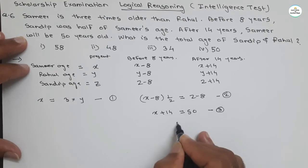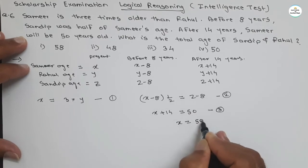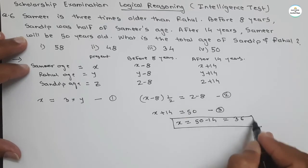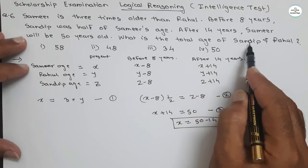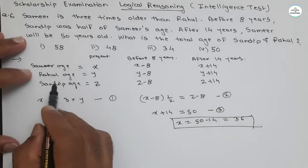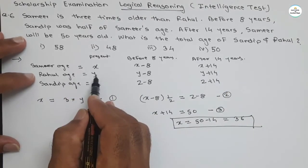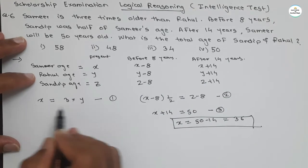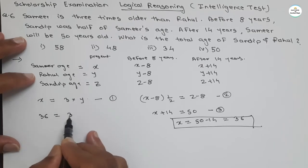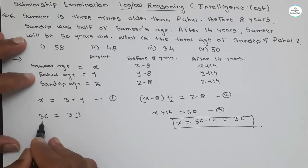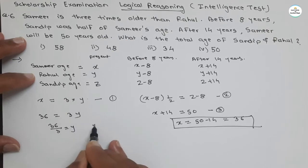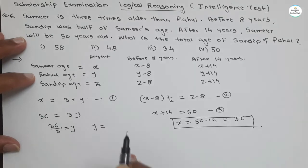If we solve the third equation, X plus 14 equal to 50, we get X equal to 50 minus 14, that is 36. So Samir's present age is 36 years. But we still need Y and Z for Sandeep and Rahul. Using the first equation, 36 equal to 3Y, transfer the 3 here: Y equal to 36 divided by 3, which is 12. So Rahul's age Y is 12 years.